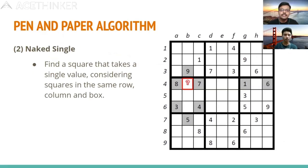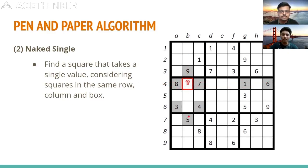The next step is the naked single. We find cells where only one value is possible, considering all three constraints: the row, column, and subgrid together. For example, if in a particular cell the row has 1, 6, 7, 8 available, the column has 5 and 9, and the subgrid has 3, 4, 7, 8 — then eight numbers are already accounted for, and only 2 can be placed there.